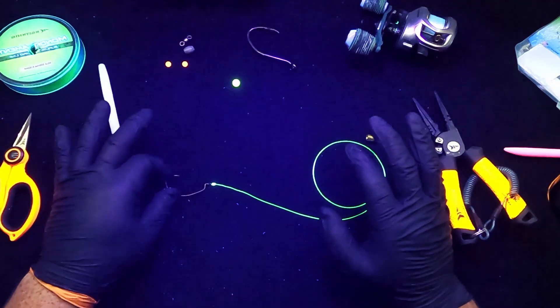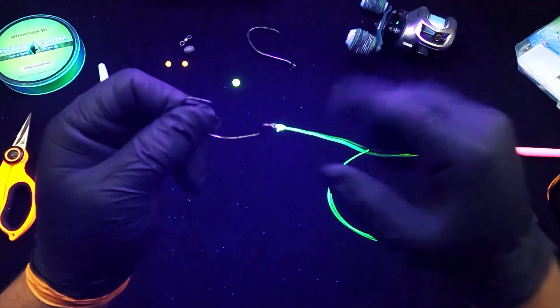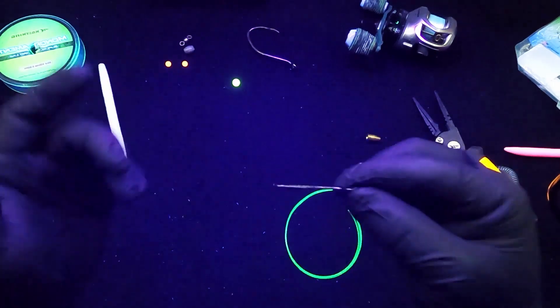It's super simple guys, check this out. Tie whichever knot you feel comfortable using onto your hook. It doesn't have to be an offset hook, but I prefer it.